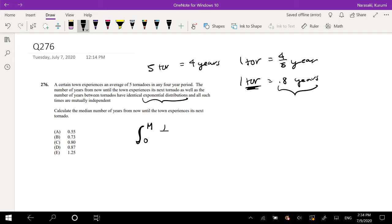So this is equal to 1 over 0.8 e to the negative t over 0.8 dt. But we know that the CDF of an exponential function is just equal to 1 minus e to the negative m over 0.8, and this should equal 1 half.